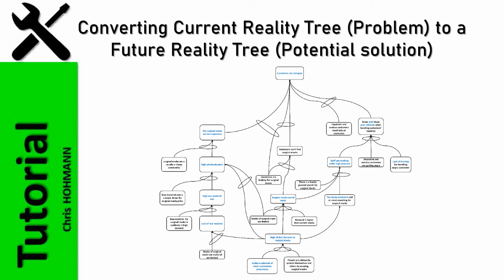A current reality tree is a thorough analysis of a problem, usually a complex one, aiming to uncover its critical root causes.